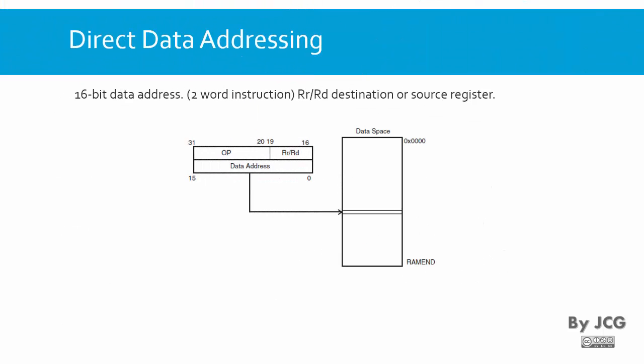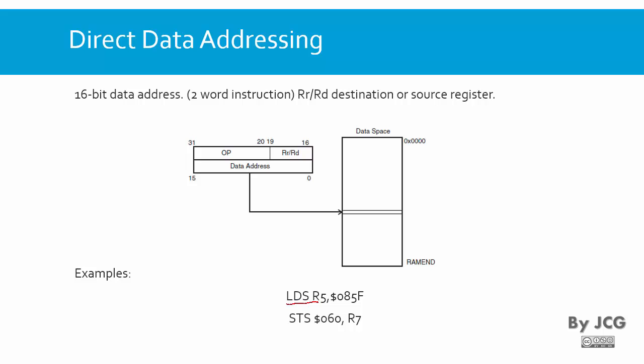Now what about the direct data addressing? Here we can access not only the special registers but all the locations in our memory. Because of that we need more space to store the address — in this particular case we have 16 bits to tell the microcontroller which address we want to read. This is embedded in the opcode. The two instructions that use direct data addressing are LDS and STS.